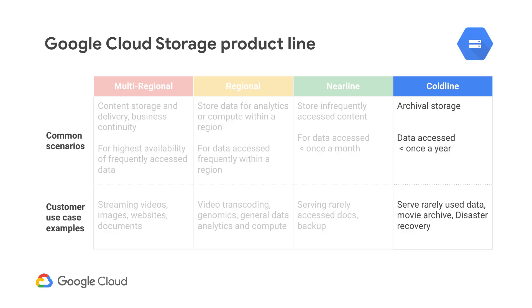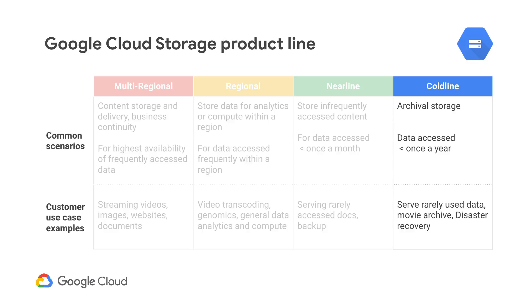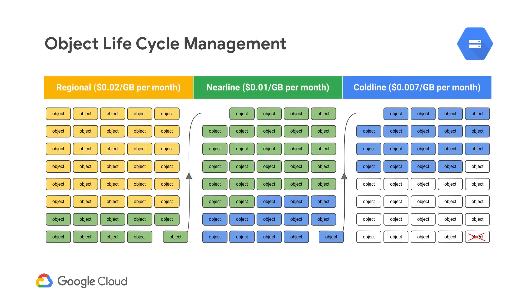And lastly, we have Coldline. The SLAs for Coldline are the same as Nearline, but the price for storing an object is even lower. Here we also have a fee for retrieving the data, and in this case, the math works out so that if you access the data less than once per year, you'll be saving money.